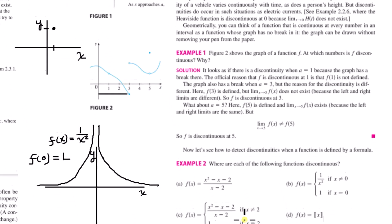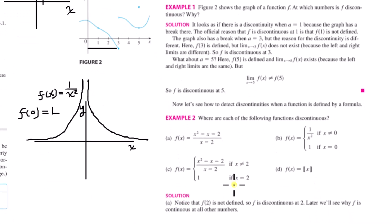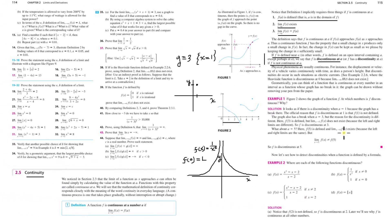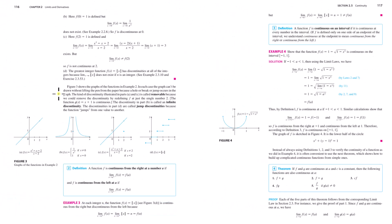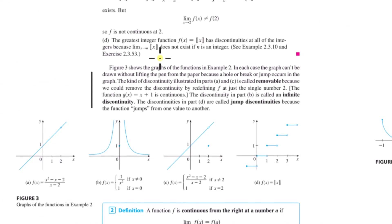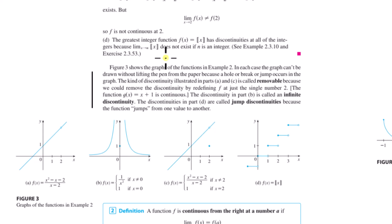Then it gets into some example problems on identifying continuity — we'll have videos where we do a bunch of those. And here it's talking about the different types of discontinuities: removable, infinite, and jump discontinuities. Those are the only three types.